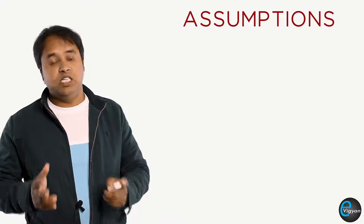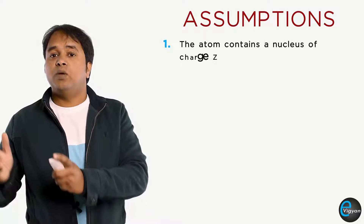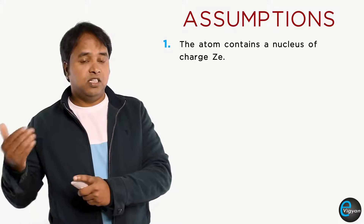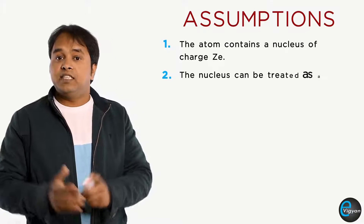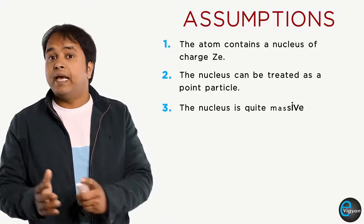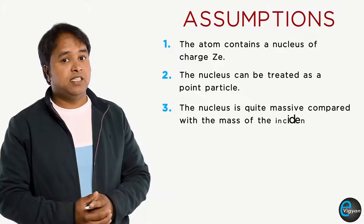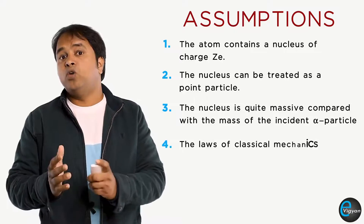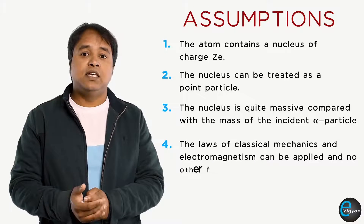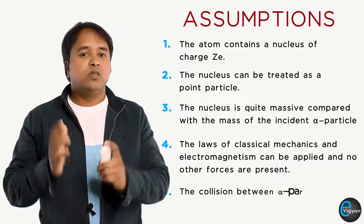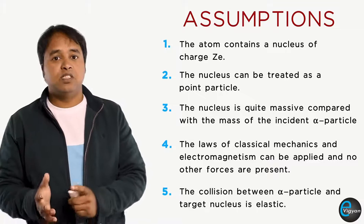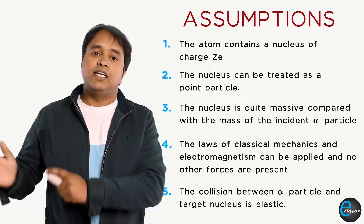Rutherford explained the data of Geiger and Marsden by making some assumptions. It was assumed that the atom contains a nucleus of charge Ze, where Z is the atomic number of the atom — that is, the number of electrons in the neutral atom. The nucleus can be treated as a point particle and is quite massive compared with the mass of the incident alpha particle, so the recoil of the nucleus may be neglected. It was also assumed that the laws of classical mechanics and electrodynamics apply, no other forces are present, and the collision between the alpha particle and the target nucleus is elastic.